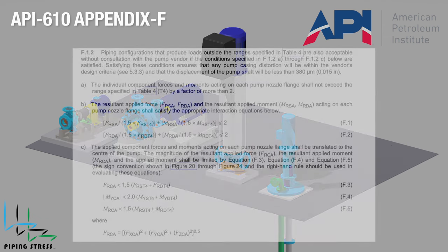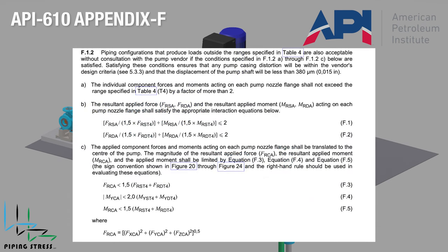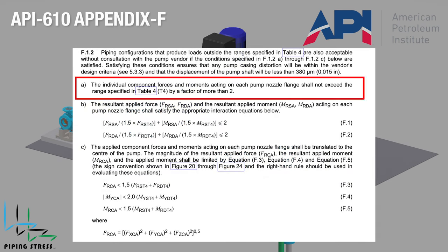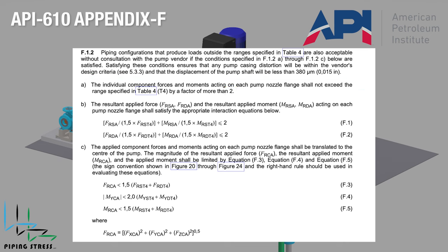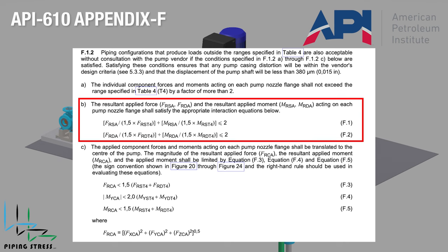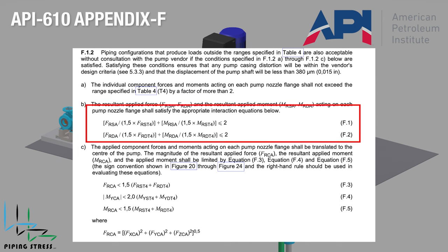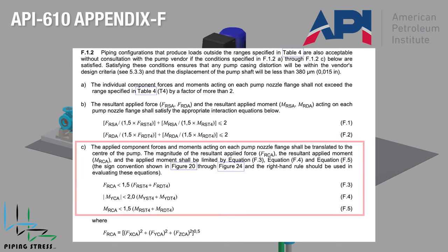The F1.2 conditions are as follows: F1.2A stipulates that all forces and moments acting on each pump nozzle flange shall not exceed the Table 4 range by a factor of more than 2. F1.2B stipulates that the resultant applied force and moments acting on each pump nozzle flange shall satisfy equations F1 and F2. F1.2C stipulates that the applied forces and moments acting on each pump flange shall be translated to the center of the pump.